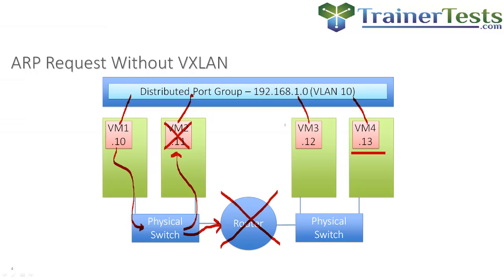VM1 is unable to discover the IP addresses of anything connected to this distributed switch on the other side of that router. That's why a vSphere distributed switch requires layer two transport — a vSphere distributed switch can't span multiple hosts that are separated by a router.